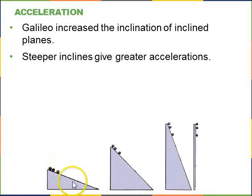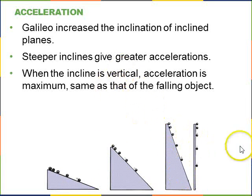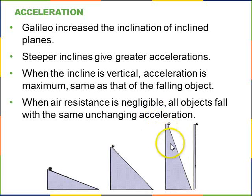This one rolls down fairly slowly. That one much faster, much faster, much faster. When the incline became vertical, the acceleration is at a maximum and it's the same as that of a falling object.